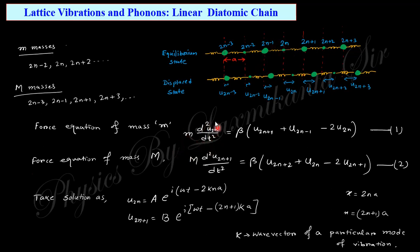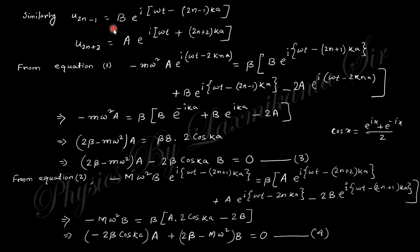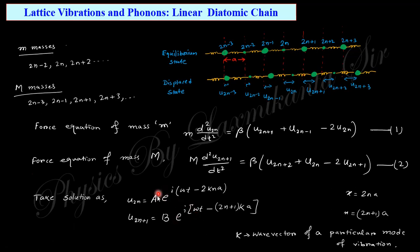The equation of motion for the small m mass at the 2n-th atom is: m × d²u₂ₙ/dt² = β × [u₂ₙ₊₁ + u₂ₙ₋₁ − 2u₂ₙ], similar to what we wrote for the monoatomic chain. For the capital M mass the corresponding equation of motion applies. We take the solution u₂ₙ = A·e^(i(ωt − kx)), where x = 2na, since a is the separation and this is the 2n-th atom.